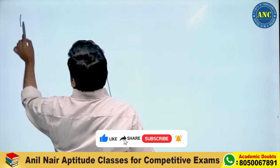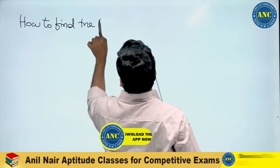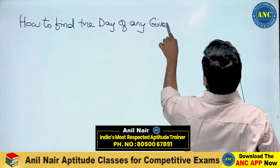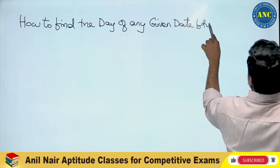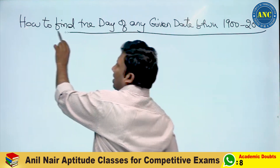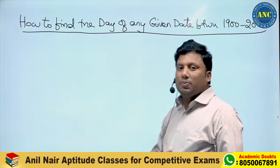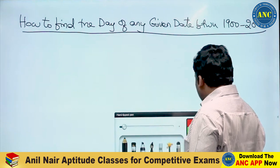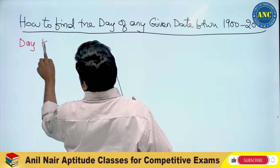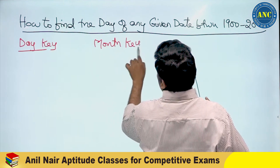Listen carefully, let me take a derivative — how to find the day of any given date. How to find the day of any given date between 1900 to 2000. You can extend it to 1700, 1800, and so on, but first we will discuss this one. There is a day key and there is a month key.